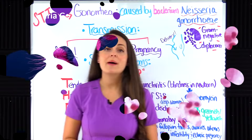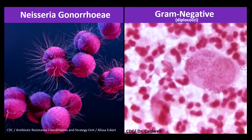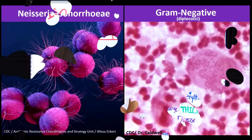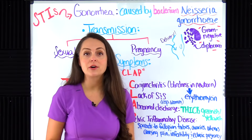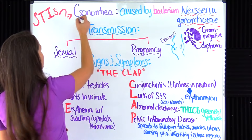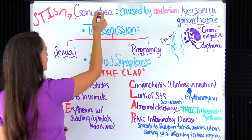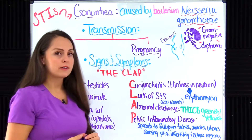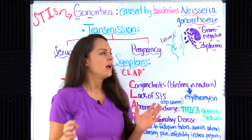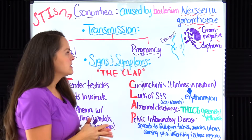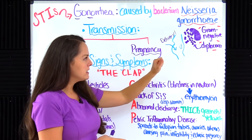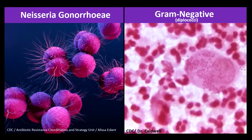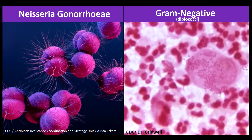Gonorrhea is caused by the bacterium Neisseria gonorrhoeae, and this bacterium is gram negative. To remember that, look at the word gonorrhea — at the beginning there's a G and a little later an N, telling you it's gram negative. When we gram stain this bacteria, we see little round bacteria occurring in pairs within a capsule, which we term diplococci.